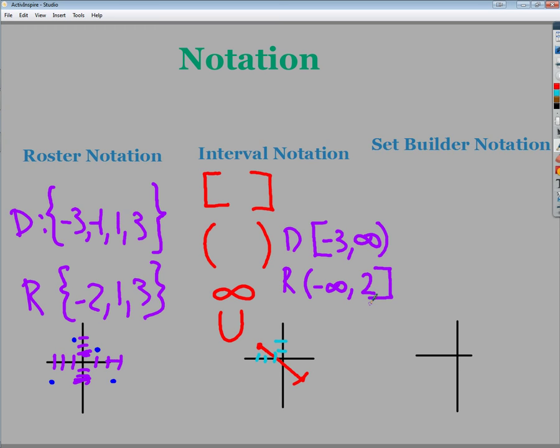If I were going to write it out in a normal way, I would say that my domain is x is greater than or equal to negative three. And my range is y is less than or equal to positive two. That whole thing. That's the difference between interval notation and what we would usually write.